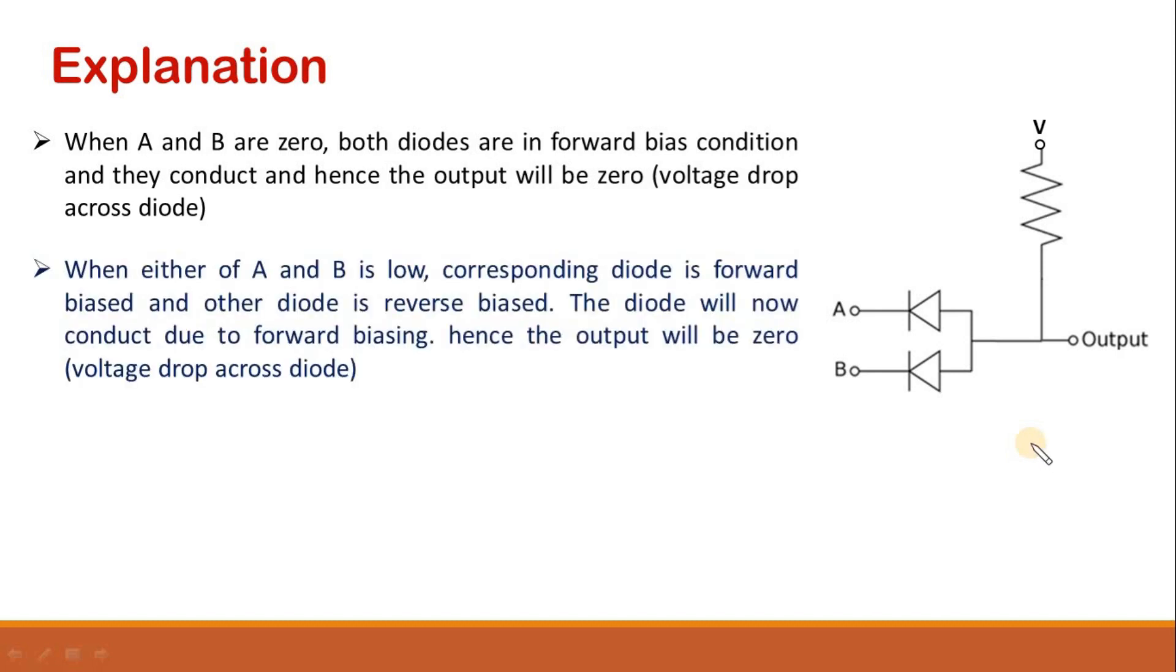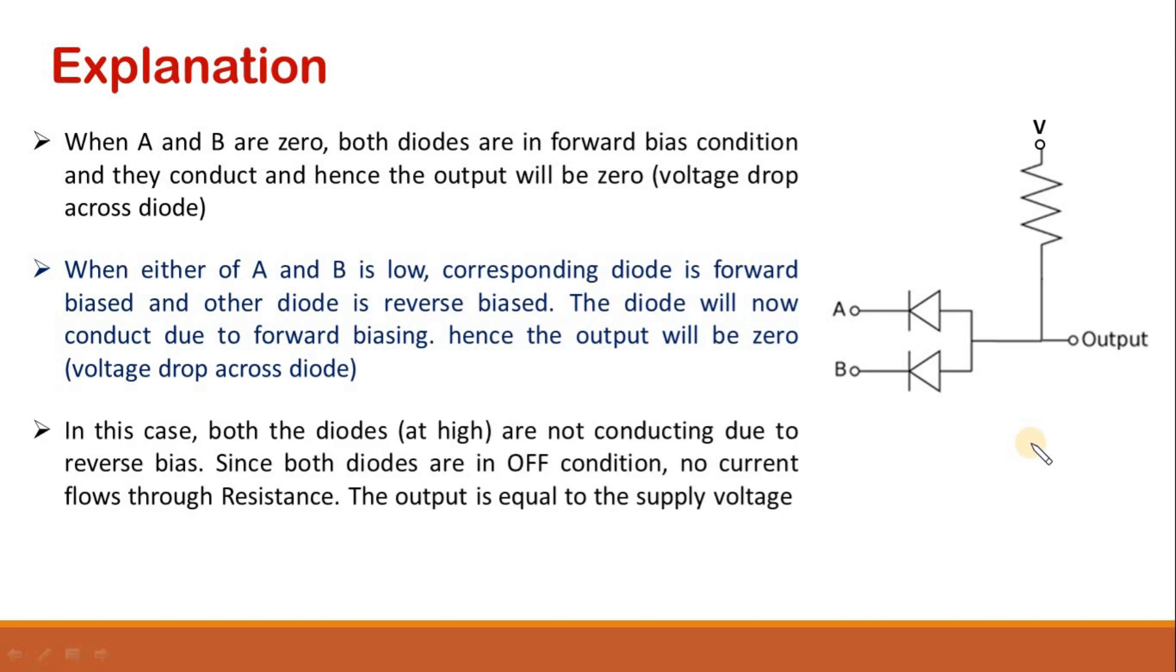When either of A or B is in low state, that means the corresponding diode is in the forward bias condition and the other diode is in the reverse bias condition. In this scenario, only the diode which is in the forward bias condition will conduct. As a result, we will get output voltage low, that is the voltage drop across the conducting diode.